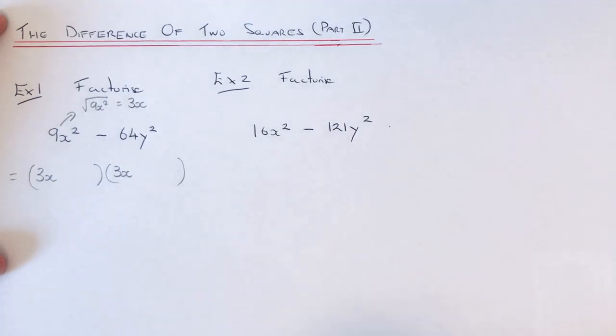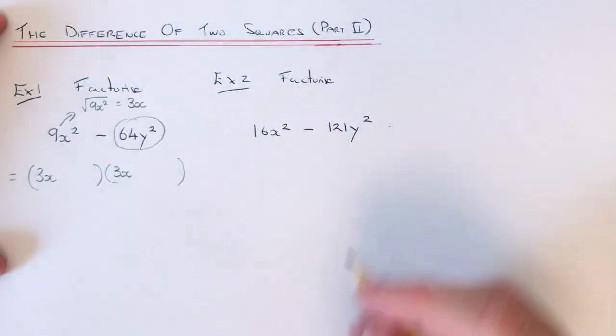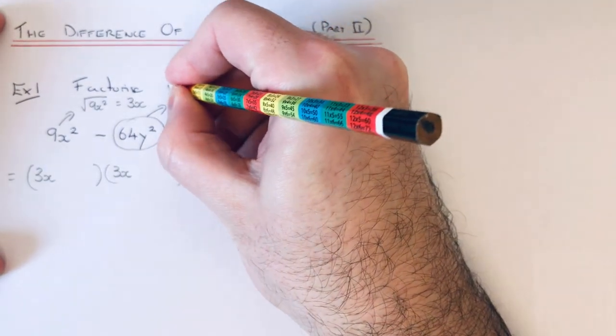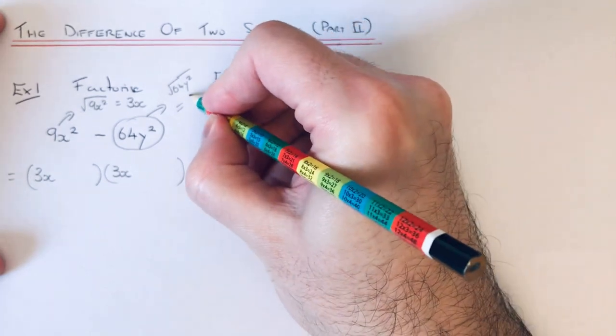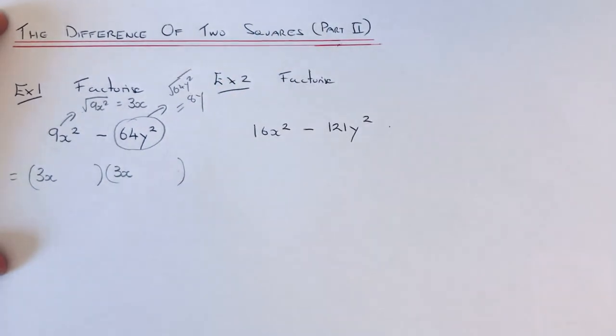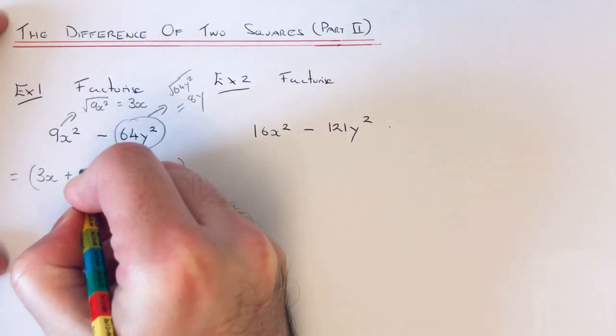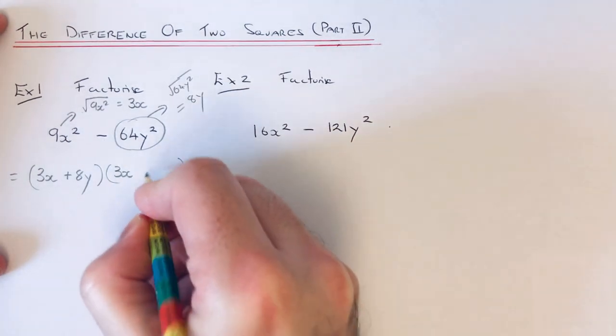And then what you do, you do the same for the second term, 64y squared. So if we work out the square root of 64y squared, this would be 8y because 8y times 8y is 64y squared. But this time what we do, we put plus 8y in the first bracket and we need to change the sign.